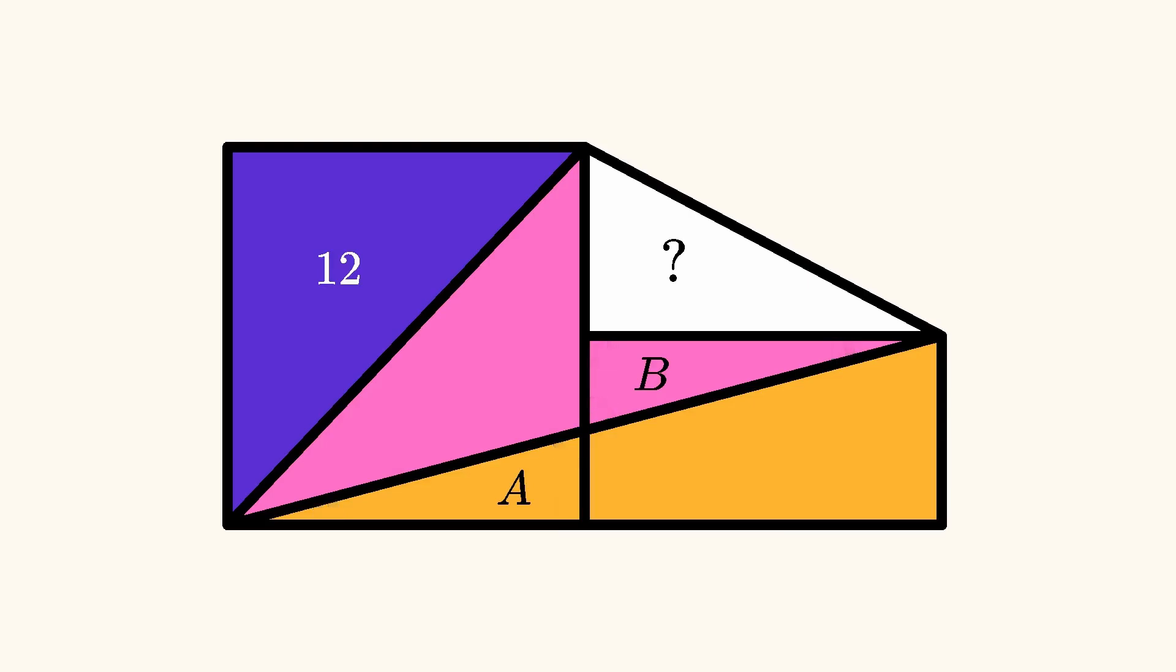This means that triangles A and B are congruent, and each of their corresponding sides have equal length. So it follows that the left and right rectangles have the same width, W.